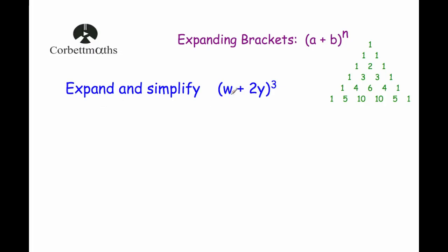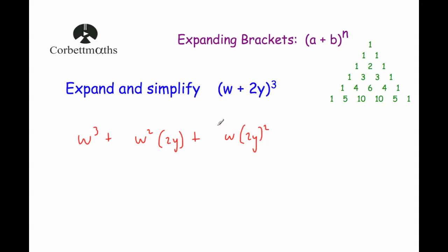The next example is to expand and simplify w plus 2y all cubed. We write: w cubed, then w squared times (2y) to the power of 1, then w times (2y) squared, and finally (2y) cubed, decreasing powers of w and increasing powers of 2y, leaving gaps for coefficients.